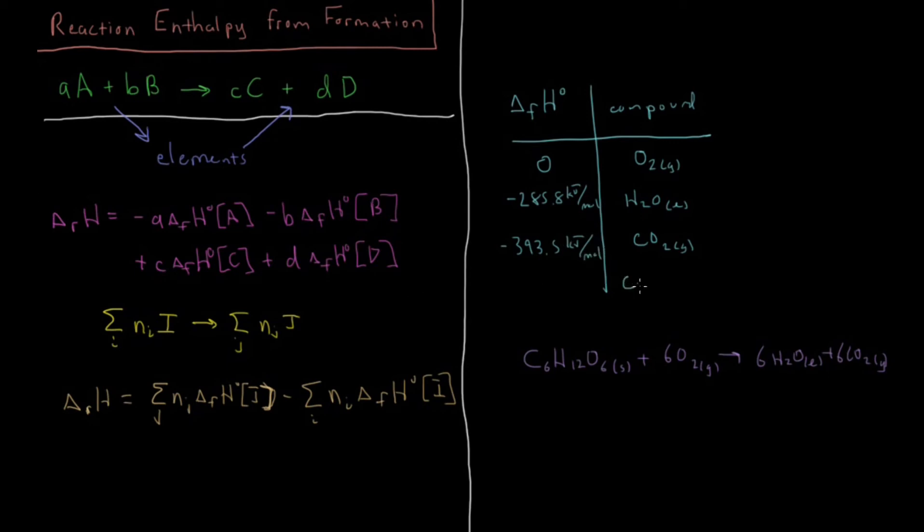And finally we have glucose, which we did as the example from the previous video, C6H12O6 solid. It's crystalline. It's going to be minus 1271 kilojoules per mole.